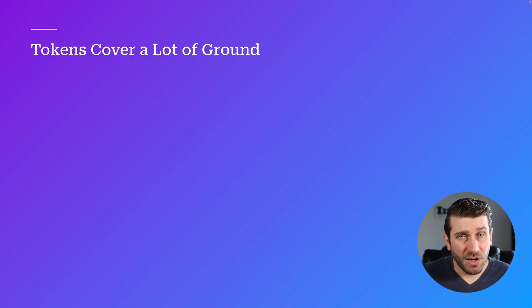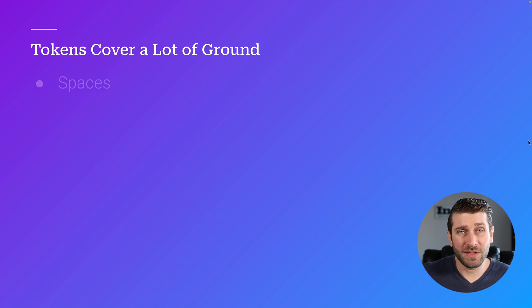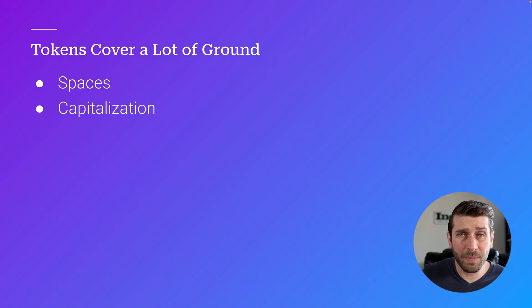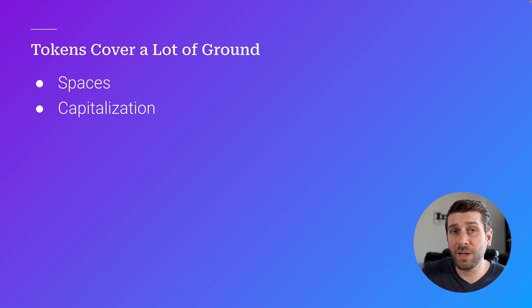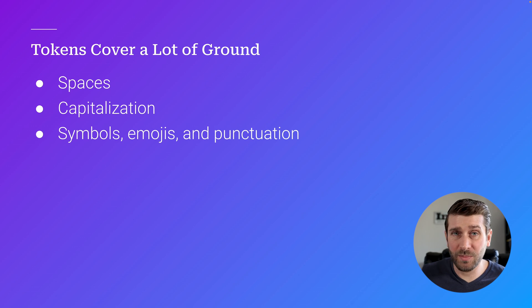The thing about tokens is that they cover a lot of ground. One of the big things they deal with is spaces — there's actually a lot of redundancy in tokens where some have a space appended to the beginning and others don't. Capitalization is another thing: 'Red' with a capital R may not be the same token as 'red' with a lowercase r. You also have all kinds of symbols, emojis, and punctuation.